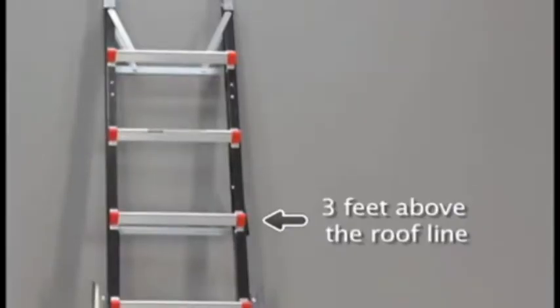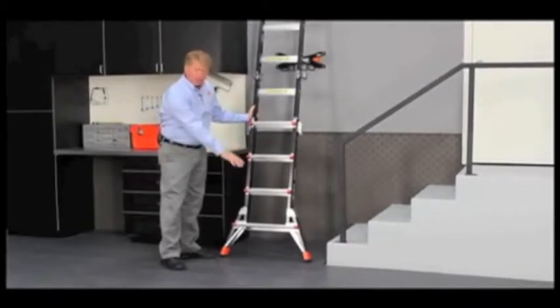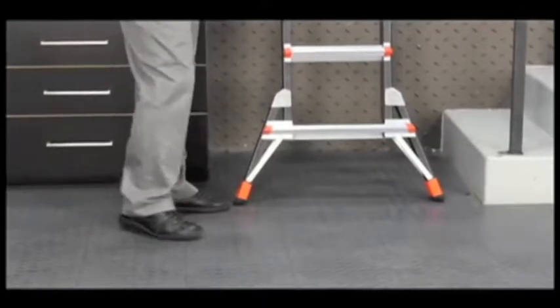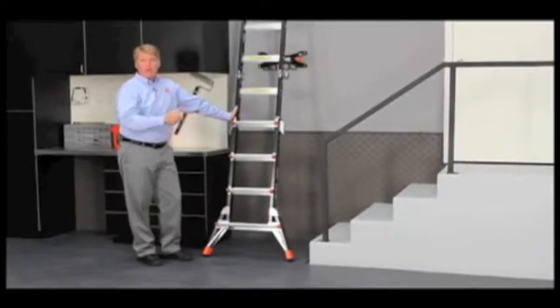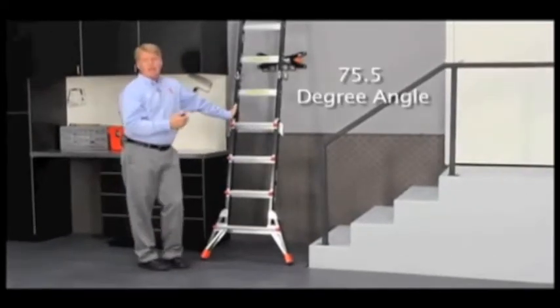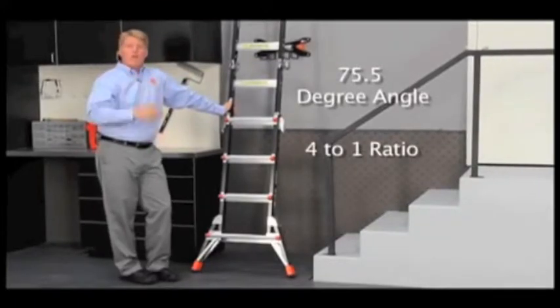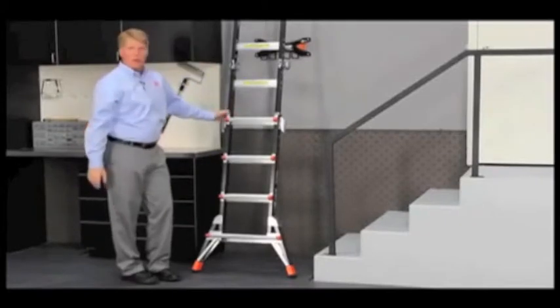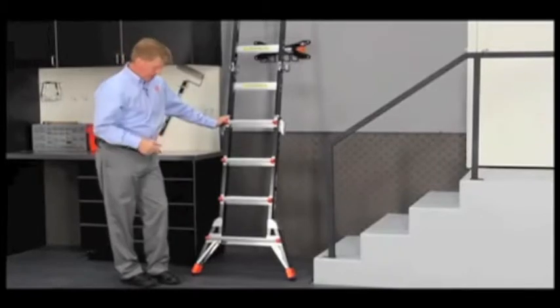Down here at the bottom you want to make sure that you're set up on good dry solid ground, as level as you can. If it's unlevel then you'll need to use a leveling device to level the ladder. And you want to make sure that your ladder is at a 75 and a half degree angle against the house, or a four to one ratio. So for every four feet up you want to come one foot out away from the wall that you're working against.